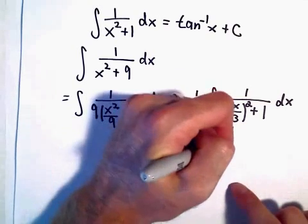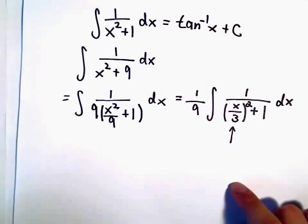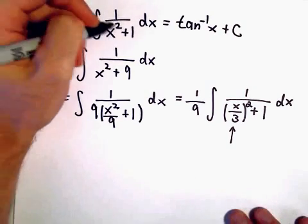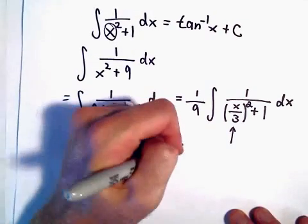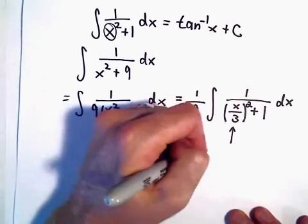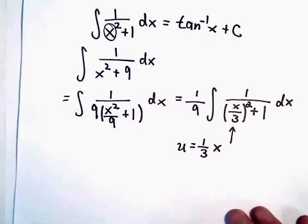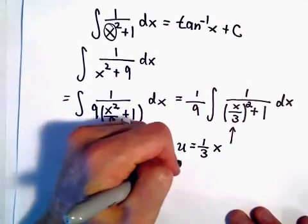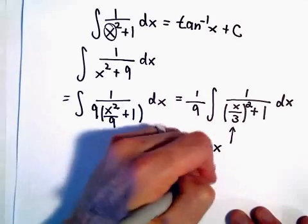So I want to just kind of get rid of this x over 3. I want it to be just a single variable. So I'm going to let u equal x over 3, or equivalently, 1 third x. Our du will just be 1 third dx.